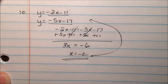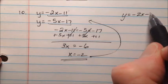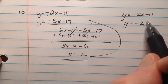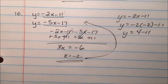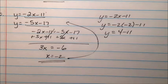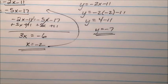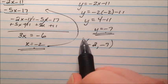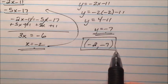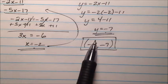We can plug it back into the equation: y equals negative 2x minus 11, so we'll plug negative 2 in for x, and we'll get y equals 4 minus 11, and 4 minus 11 is negative 7. Since we have actual values for x and y, we can make them into an ordered pair: negative 2, negative 7. And if we're classifying this, it's going to be consistent and independent, since they intersect at one point.